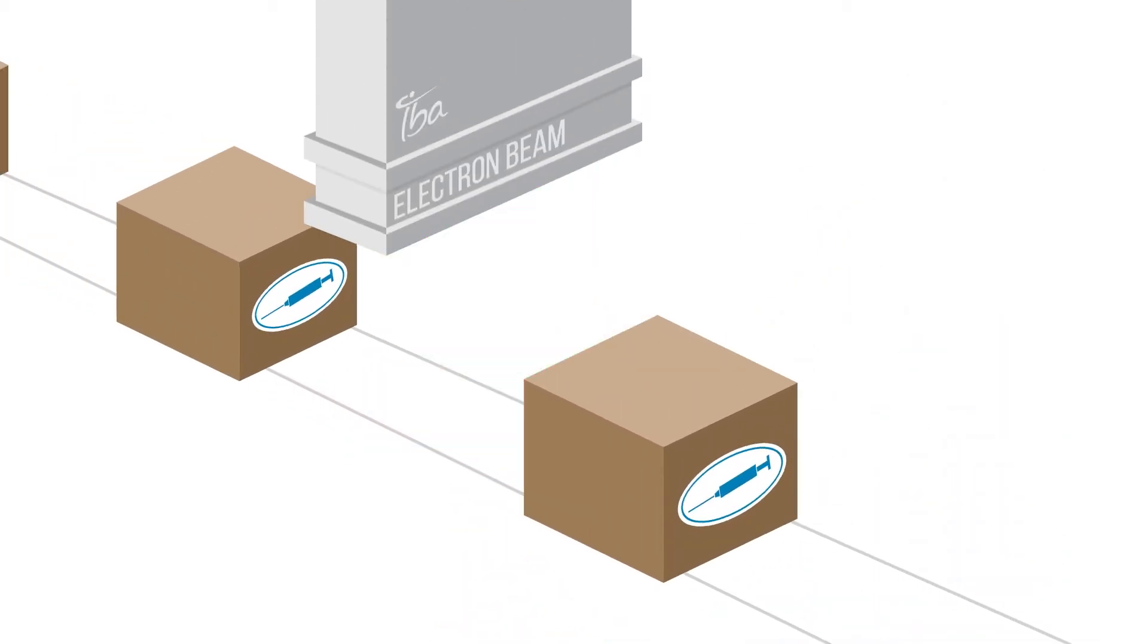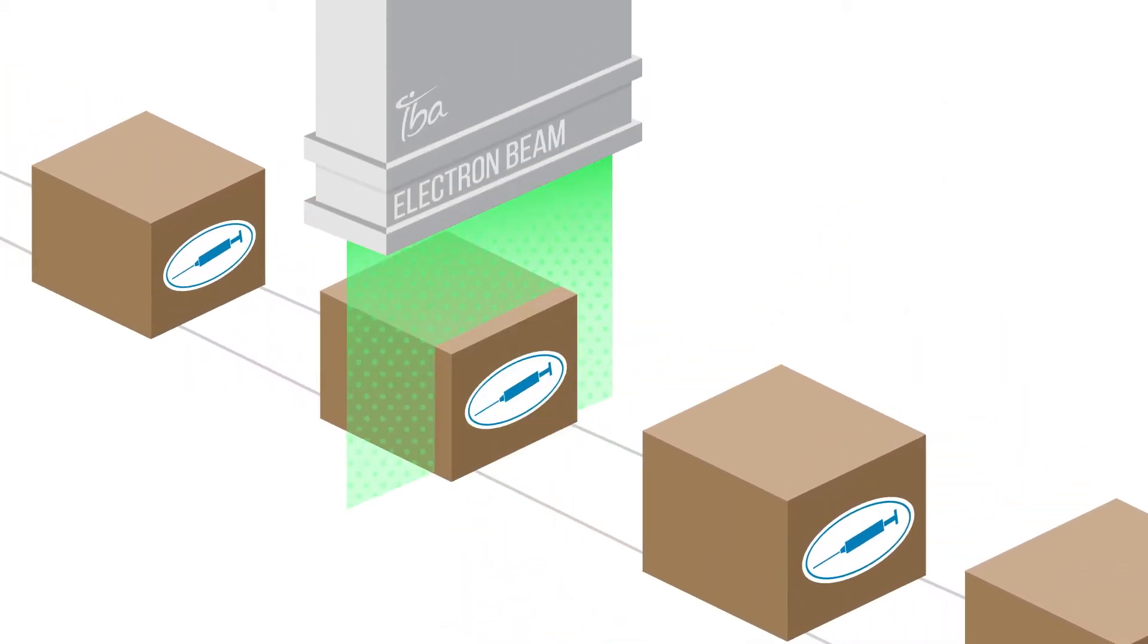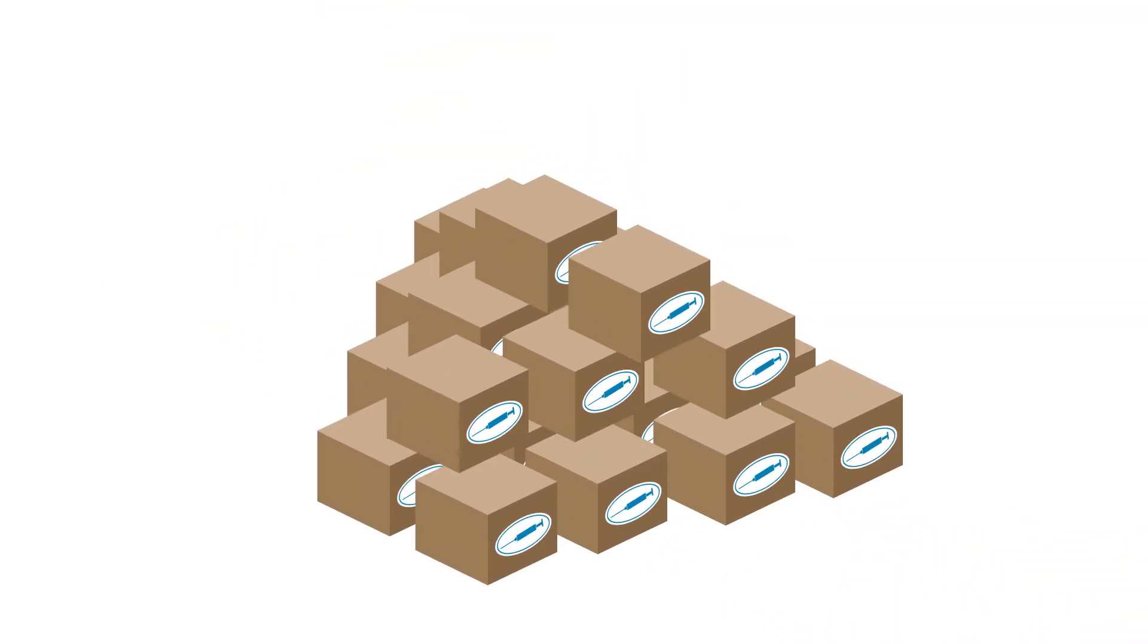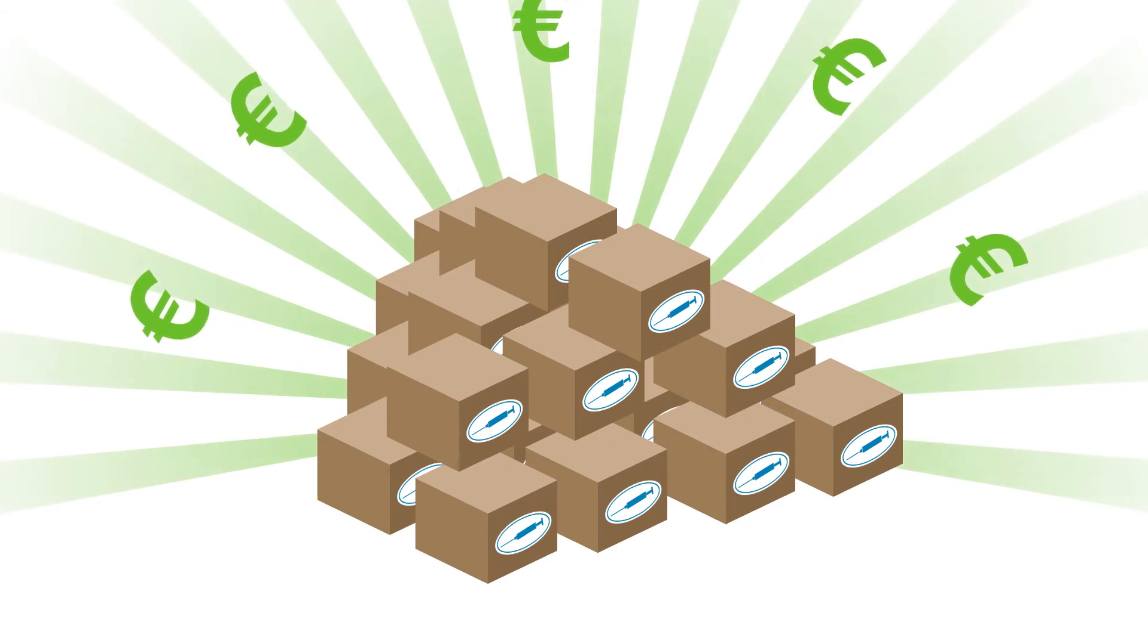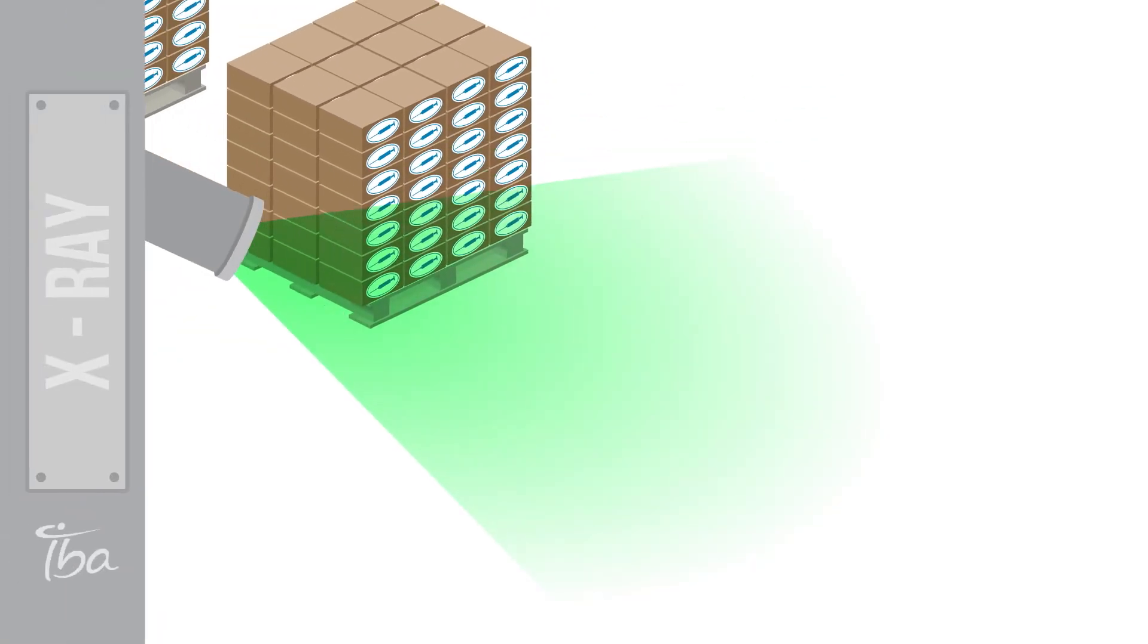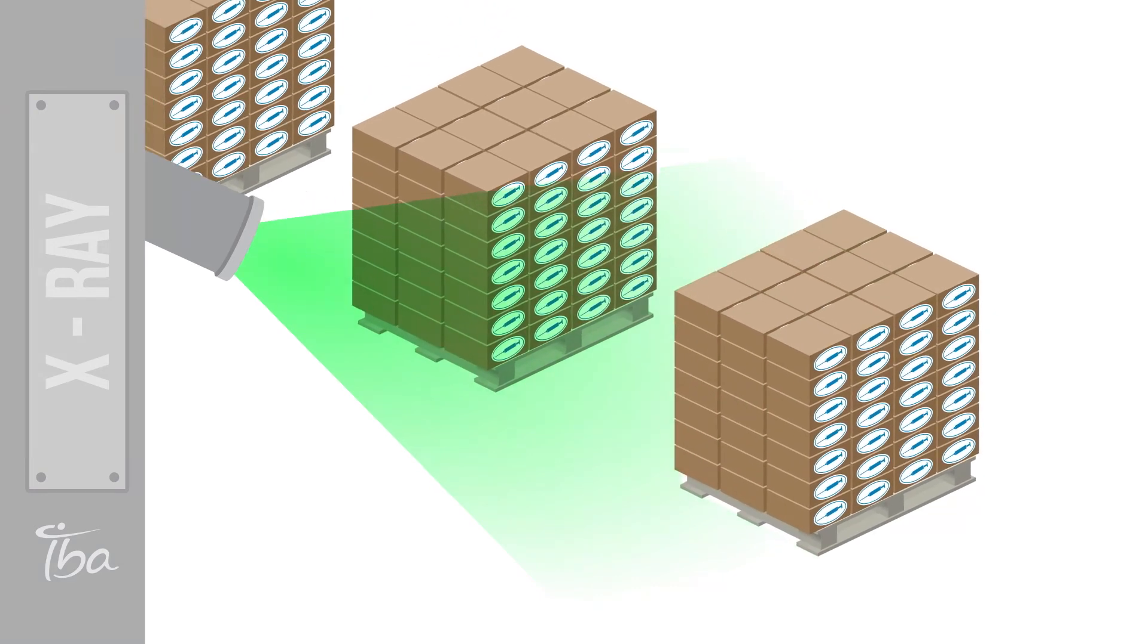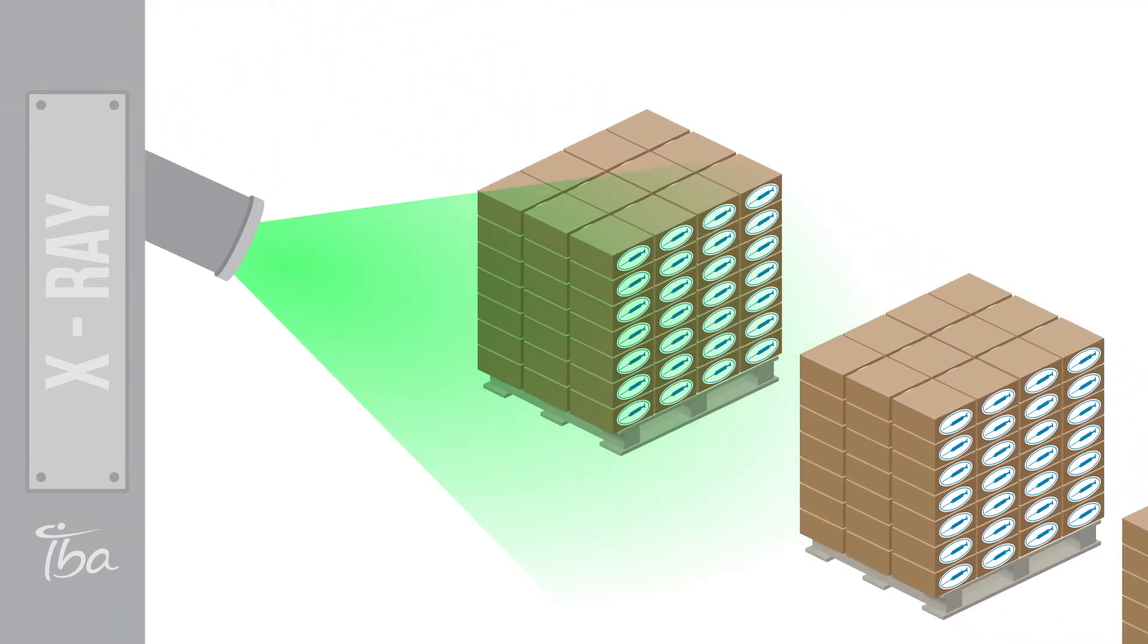Electron beam is an electrical-based process that sterilizes medical devices in seconds. It is also the most efficient technology in terms of cost per volume sterilized. X-ray is also an electrical-based process, ideally suited to replace gamma sterilization due to its superior performance.